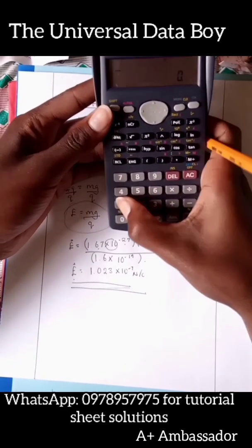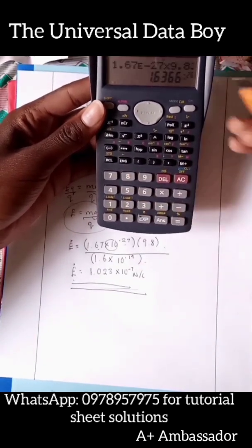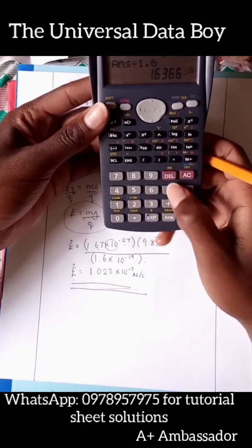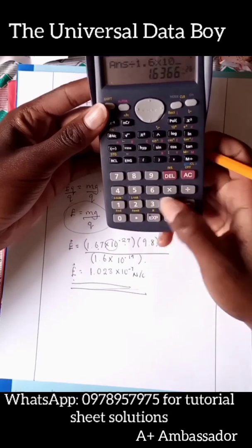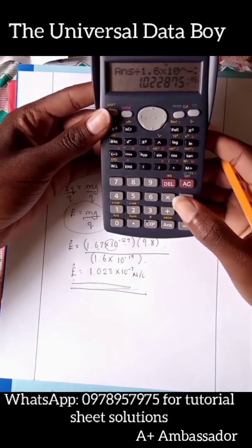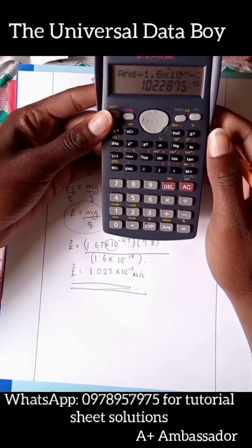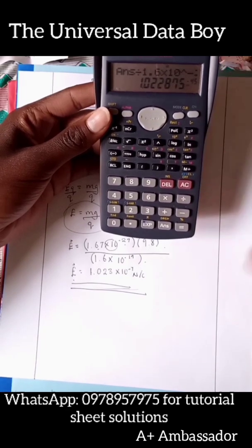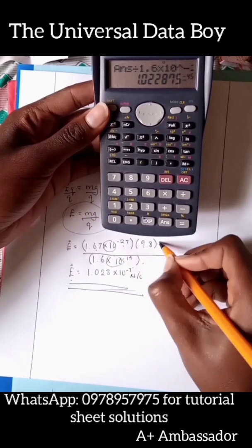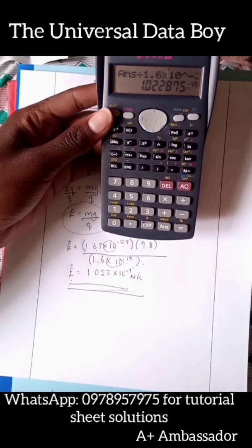For example, when we plugged in the value 1.67 exponent negative 27 times 9.8, we had our answer there. Now imagine if we had to say divide by 1.6 times 10 times 10 to the power negative 19, we would have a whole different figure, would be having times 10 to the power negative 40, 45 yeah. So let's shy away from using times 10 to the power negative 19 and start using exponent rather, because when we use times 10, which means that we divide this one by this one and then multiply it times the negative 19, which will give us a figure that's very very different from what we actually want.